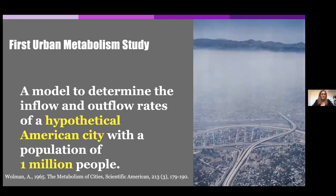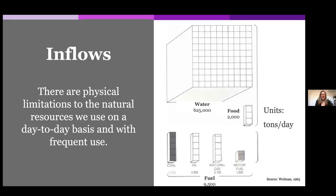This concept starts with a hypothetical study of an American city with a population of 1 million — hypothetical in a sense, but trying to determine the amount of inputs and outputs into a city of 1 million people. Recognizing this was done in the 1960s, I've tried to keep the images the way they were produced in his paper, to give a sense of what it was like doing an urban metabolism study for the very first time.